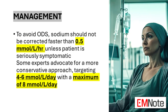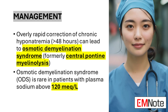For severe, symptomatic hyponatremia, hypertonic saline is the treatment of choice. The goal is to raise serum sodium levels slowly and cautiously, typically aiming for an increase of 4 to 6 millimoles per liter in the first 24 hours. This careful approach is crucial to avoid osmotic demyelination syndrome, a potentially devastating neurological complication that can occur with overly rapid correction of chronic hyponatremia.